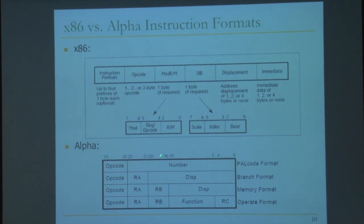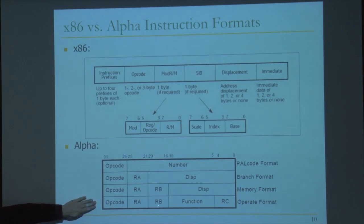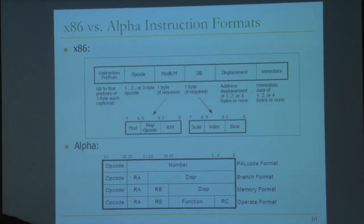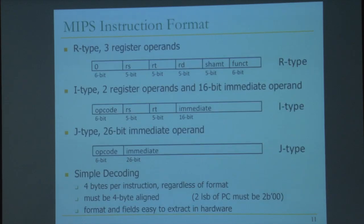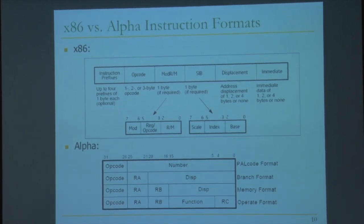Let's take a look at these two instruction formats. Alpha has a very regular format: opcode, register A, register B, register C — always in the same place. Branch format, memory format, operate format — clean and simple. MIPS instruction format is actually similar to Alpha — simple and clean. By contrast, x86 is a variable length ISA where the smallest instruction is one byte opcode, and the instruction can be very powerful, specifying for example an increment of a memory location.